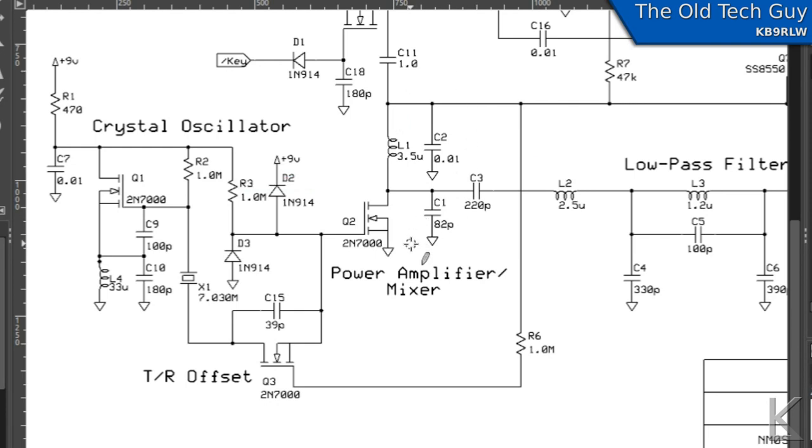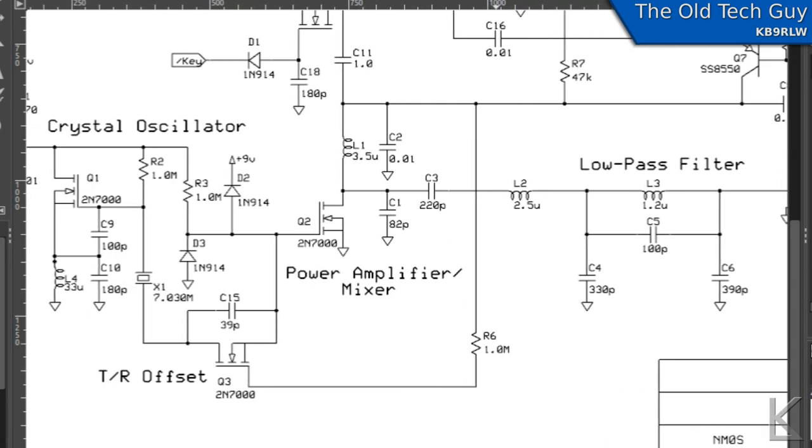The downside to direct conversion receivers however is that some of this local oscillator energy will leak through the mixer and go back out the antenna and since it's at the same frequency you're receiving at the low-pass filter will pass it and you'll get some oscillator leakage. In testing when I built the kit with James who's parked about 70 80 yards away he could hear the oscillator 10 over 9 so I'm curious to see how much it's leaking.